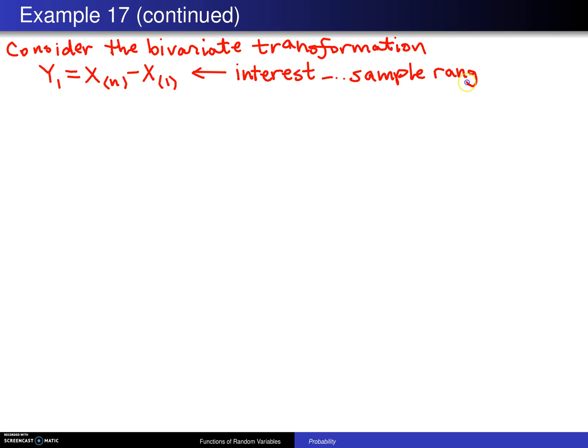To use the transformation technique, we have to set up a dummy transformation. You can set up any dummy transformation as long as you're setting up a one-to-one transformation. In this case, I'm going to use x_(n) for y2. That turns out to be a one-to-one transformation from script A, which is the support of the minimum and maximum order statistics, to script B.